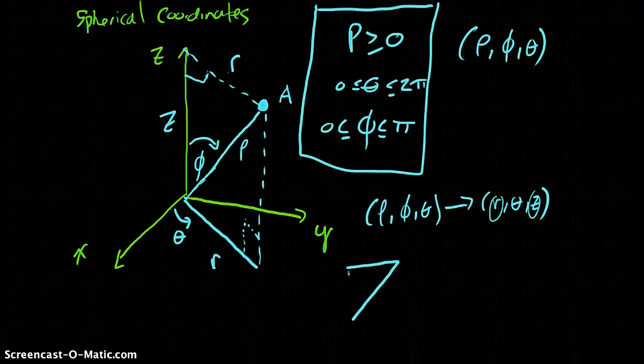So really, we can determine all the information that we want by looking at this little picture right here. Well, what is r going to be? r is going to be rho times the sine of phi.